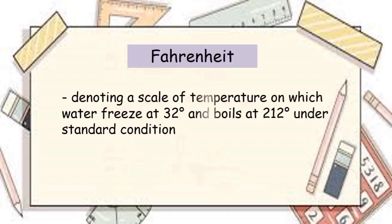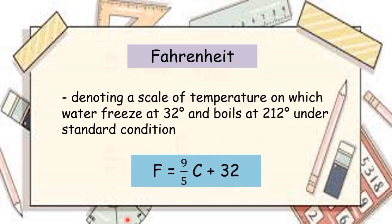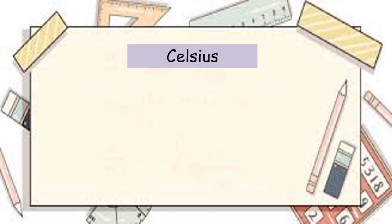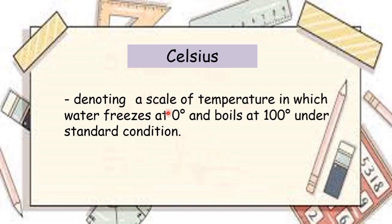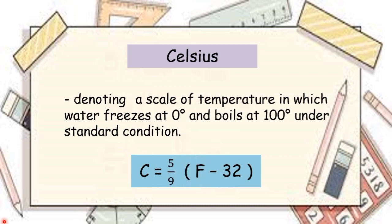What is Fahrenheit? It denotes a scale of temperature on which water freezes at 32 degrees and boils at 212 degrees under standard conditions. The formula for Fahrenheit is F = 9/5 × C + 32. Next is Celsius — it denotes a scale of temperature in which water freezes at 0 degrees and boils at 100 degrees under standard conditions. The formula for Celsius is C = 5/9 × (F − 32).